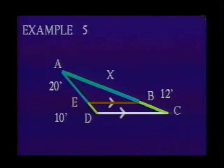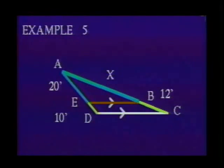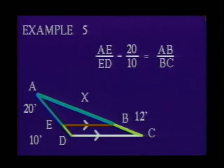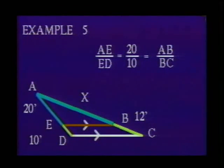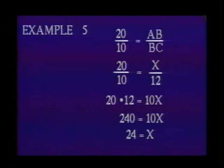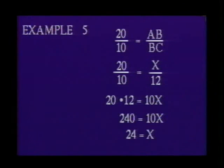If the measure of line segment AE is 20 feet, the measure of line segment ED is 10 feet, and the measure of line segment BC is 12 feet, what will be the measure of line segment AB? Letting X equal the length of line segment AB, we have 20 is to 10 as X is to 12. Solving this proportion, we find that X = 24.